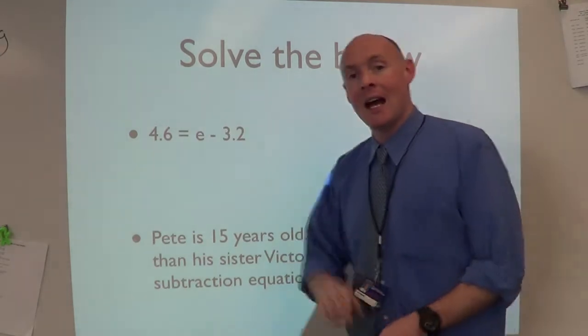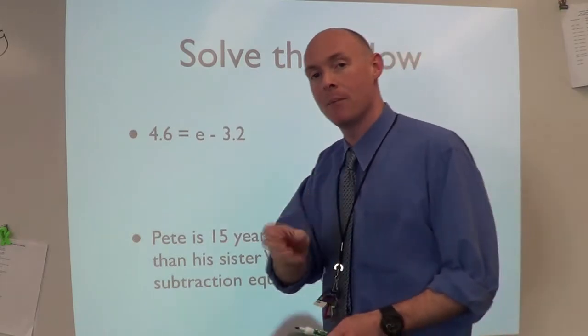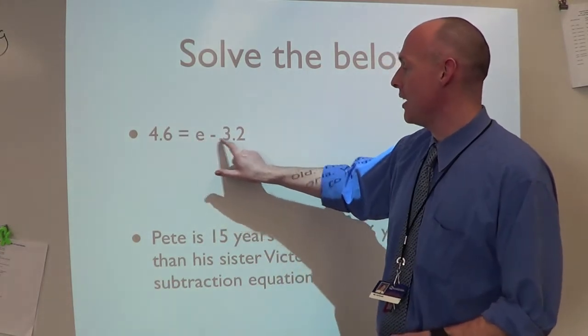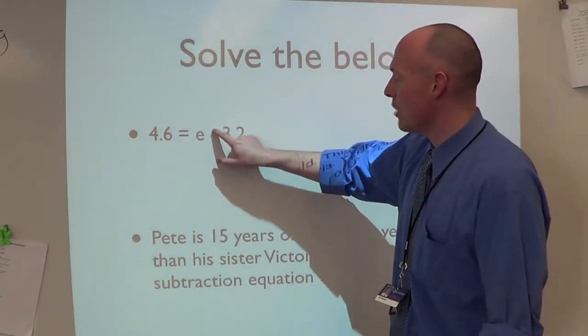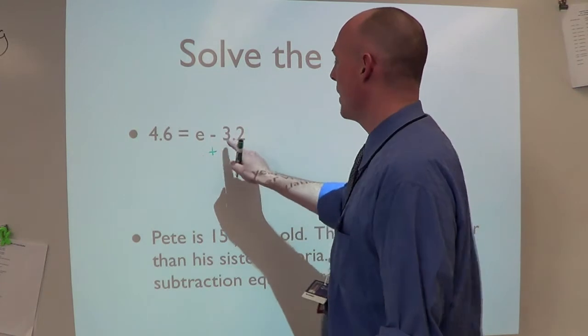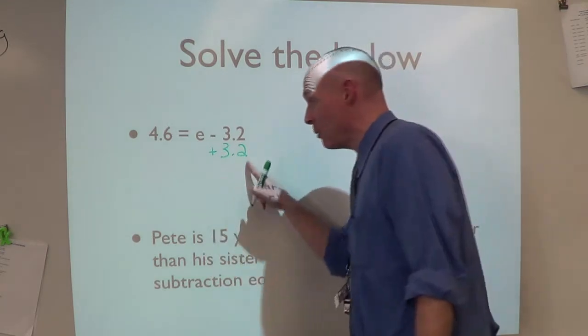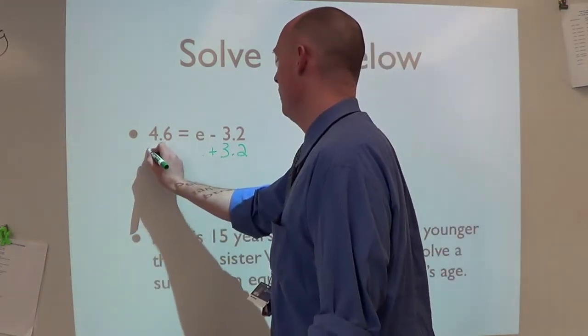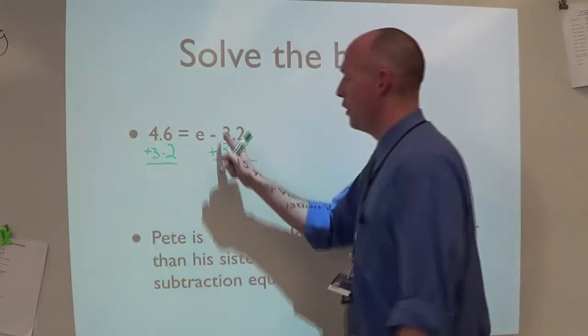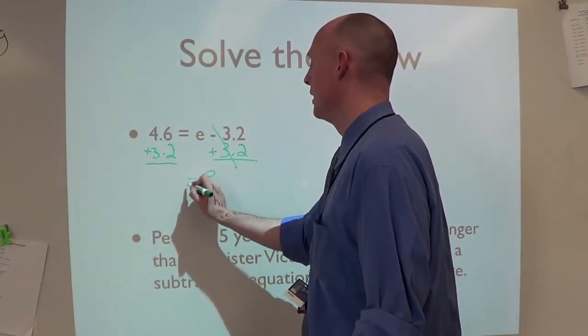Here's an example with decimals. 4.6 equals e minus 3.2. I see subtraction, so I want to do my inverse - the inverse is addition. We're going to add 3.2. If we do it to this side, we've got to do it to this side. Plus 3.2. These two will cancel each other out, leaving e by itself.